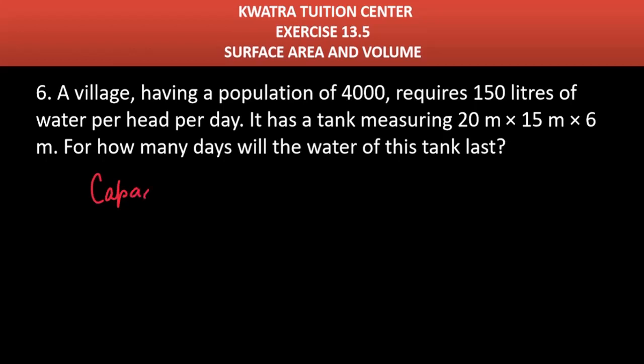So first let's start with the capacity of this cuboidal tank. It will be L into B into H, and L, B and H you have already mentioned: 20, 15 into 6. This will give you 1,800 meter cube.